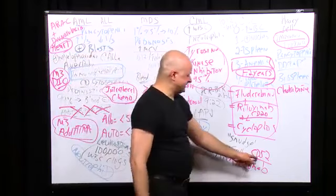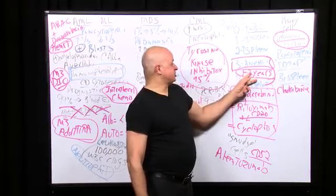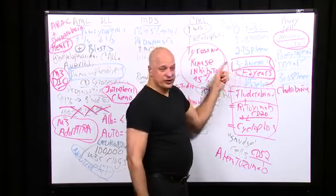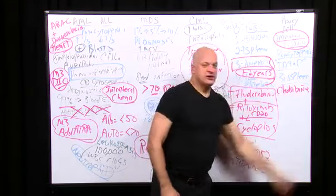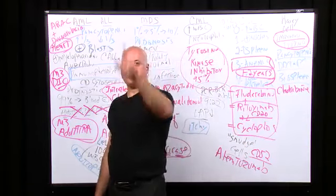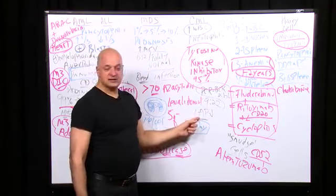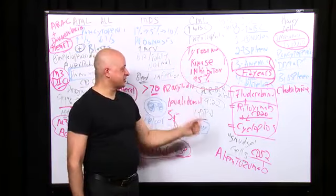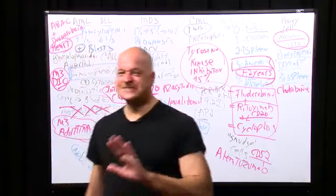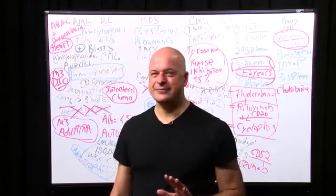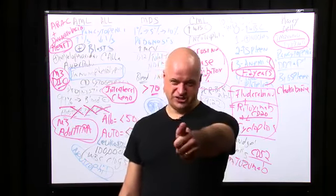Rasburicase prevents tumor lysis syndrome. Alemtuzumab (anti-CD52) is for CLL. Don't mistake advanced disease and do nothing because it's CLL — advanced disease gets chemotherapy. Don't say tartrate resistant acid phosphatase — say immunophenotyping. LAP and TRAP are out. Say immunophenotyping and cell sorters. The amount you need to know about acute and chronic leukemias for your exam is not that much — concentrate on adverse effects of medications and you'll be awesome.